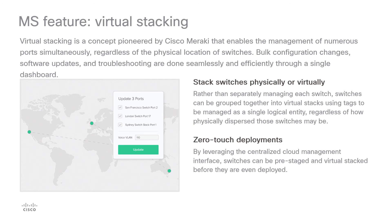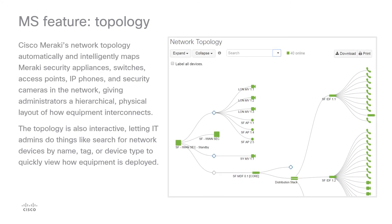Network topology automatically maps the network architecture, showing how Meraki security appliances, switches, cameras, and wireless devices are connected, including redundant links disabled by the spanning tree protocol to prevent data loops. In the topology view, a square represents MX security appliances, a rectangle represents MS switches, and a circle represents MR access points. Non-Meraki equipment is also detected and displayed because Meraki MS switches automatically listen for LLDP and CDP broadcasts from connected devices, enabling detection of manufacturer, model type, IP address, and more from third-party equipment automatically, with no overlay software needed.